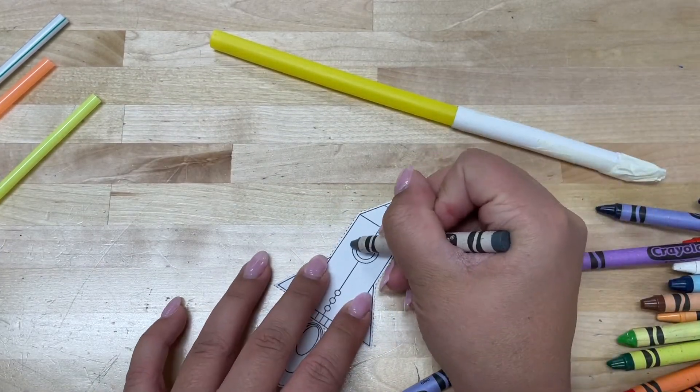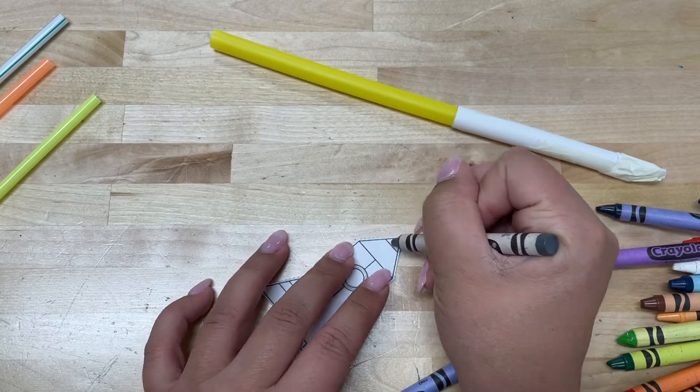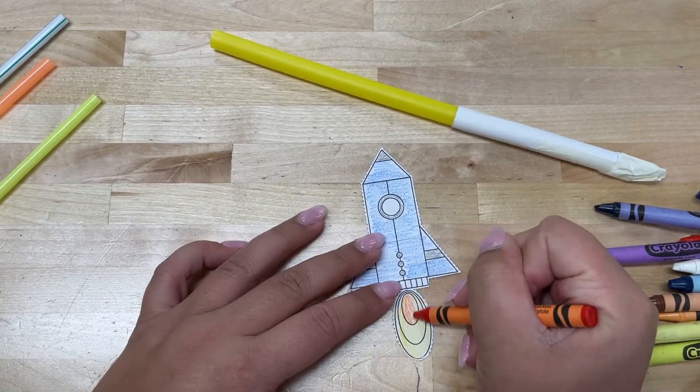Choose a rocket and color to make it more fancy then tape it onto your paper tube.